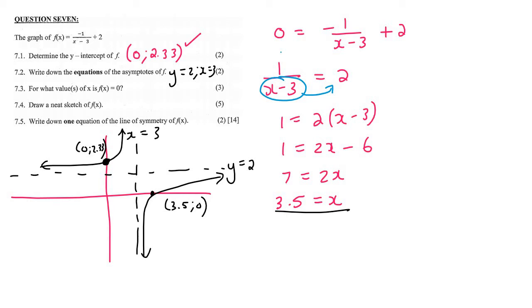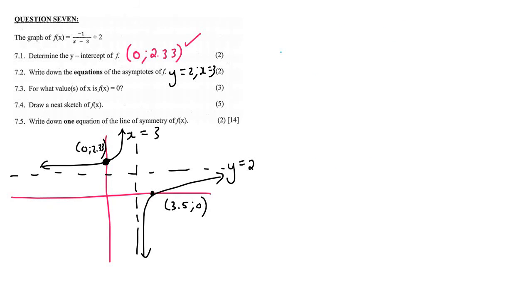7.5: write down one equation for the line of symmetry. Now because some of you are going to choose one option and some another, I have no choice but to show you both. Remember that the equations of symmetry are the lines that go through the intersection of the asymptotes.